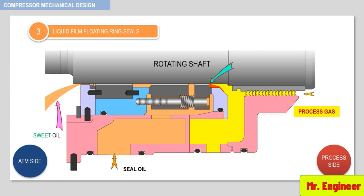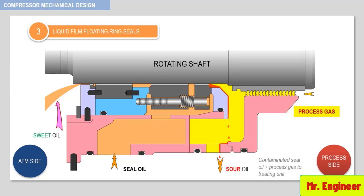The seal oil which comes in contact with the process gas is called sour oil and may be contaminated. This oil is recovered along with the process gas and treated in a separation unit downstream the compressor.